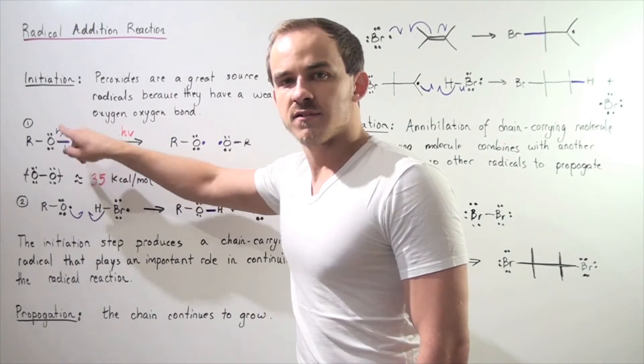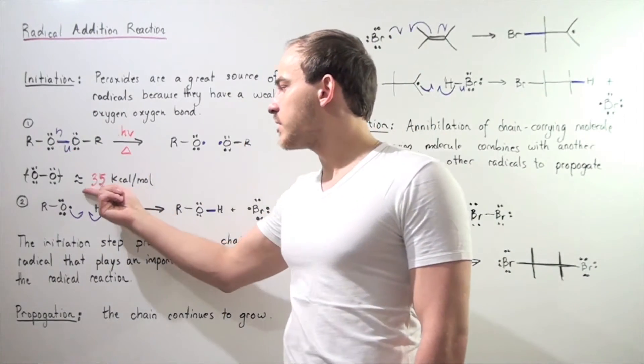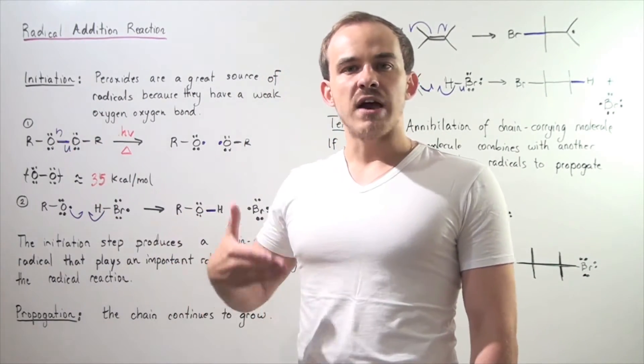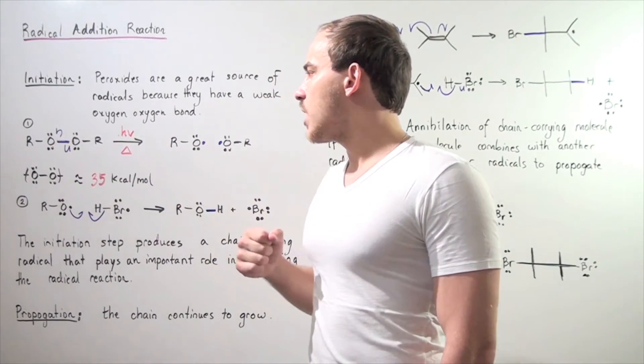In fact, this is a relatively weak bond because it requires approximately 35 kilocalories of energy to break one mole of this peroxide.